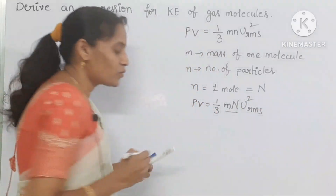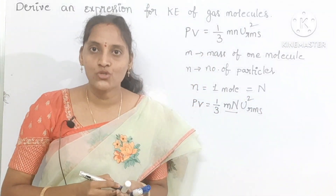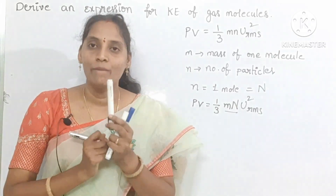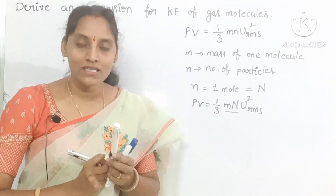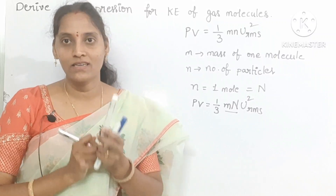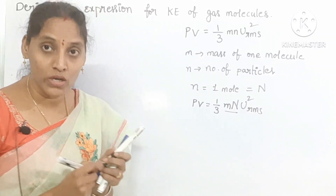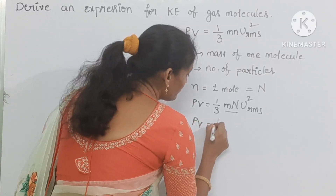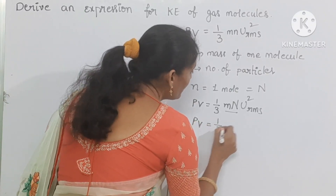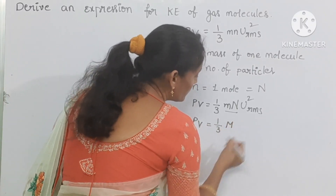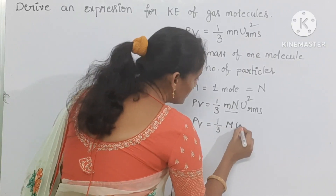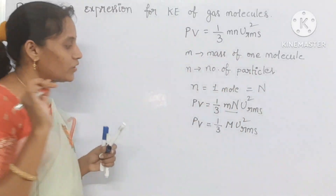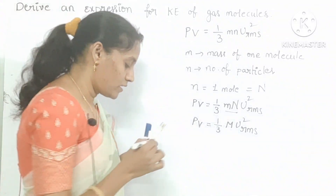Remember, small m times Avogadro's number gives you molar mass. So instead of mN, you should write capital M — that is nothing but molar mass. So PV equal to 1 by 3 M U_rms squared, where M is the molar mass.